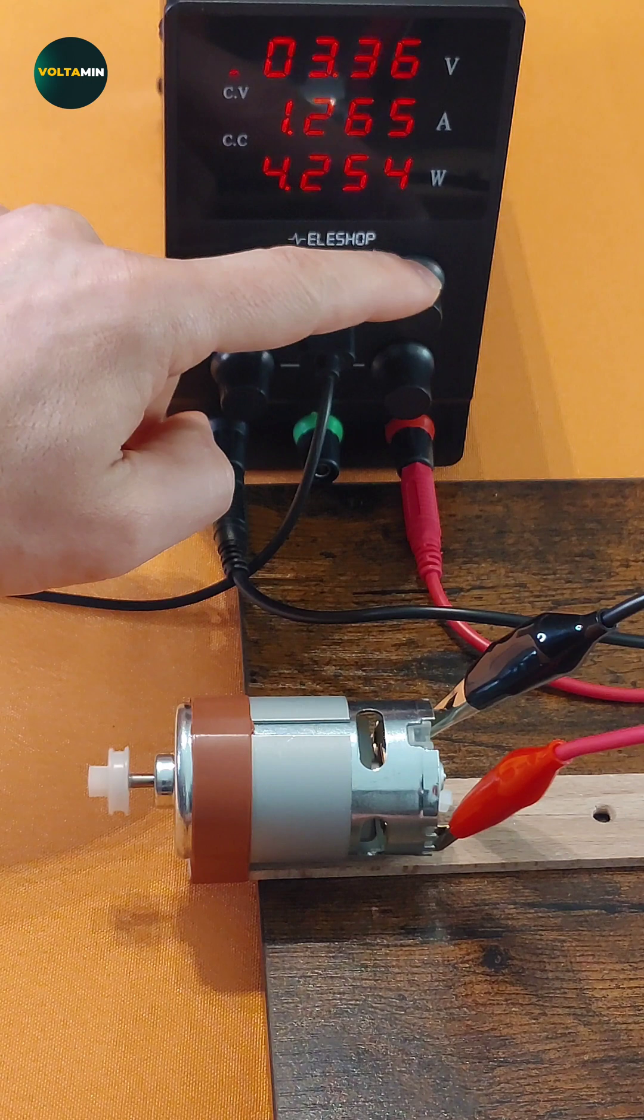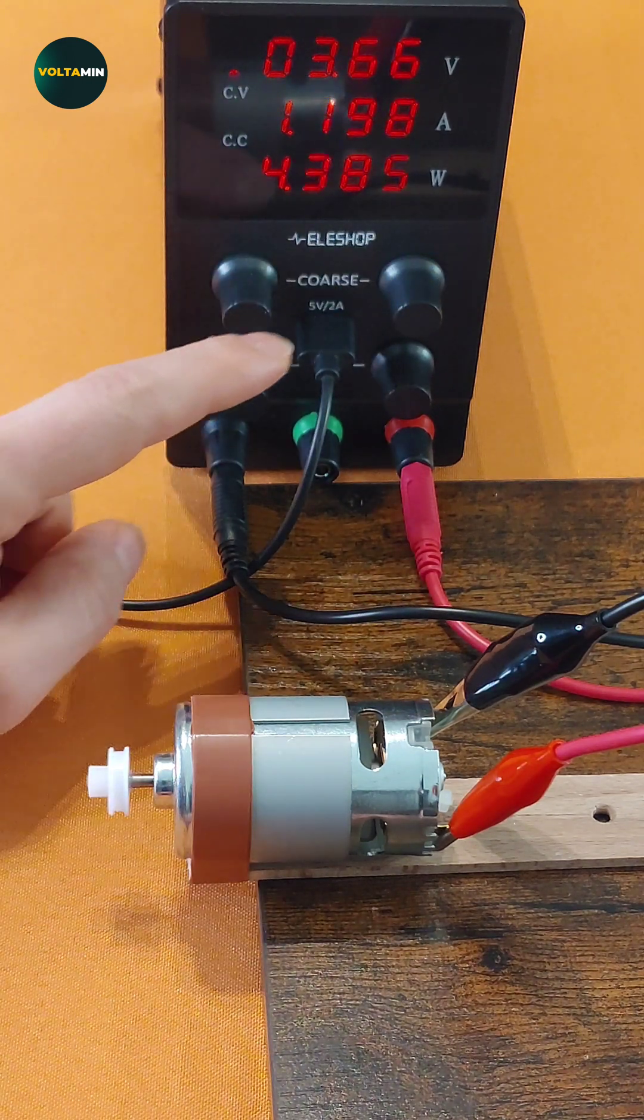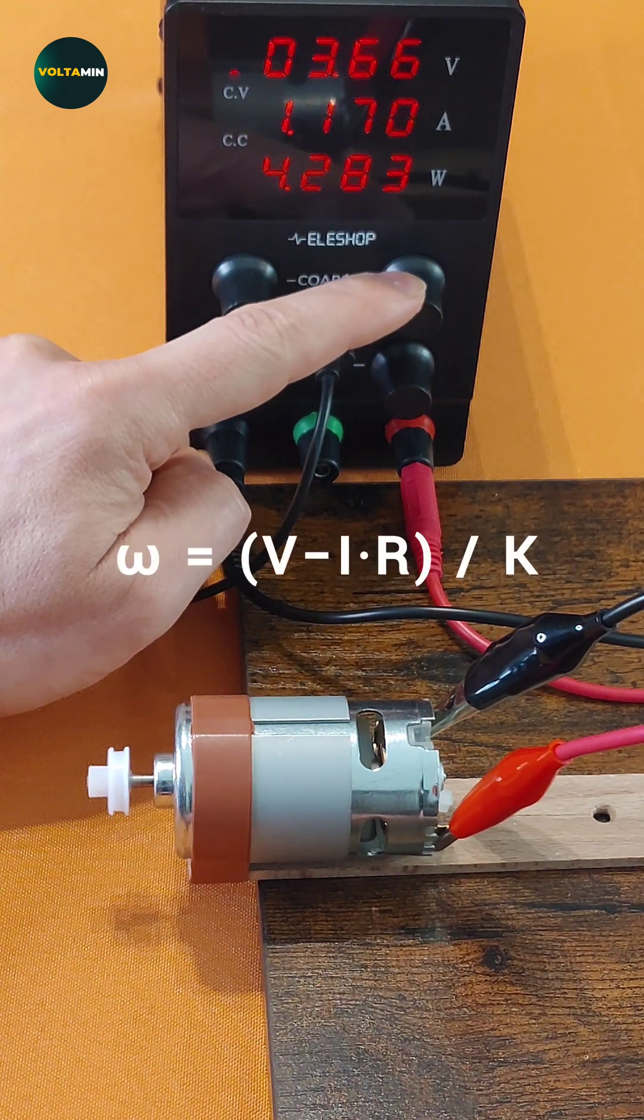The relationship between the motor's angular velocity omega and the applied voltage V is given by omega equals V minus I·R divided by K.